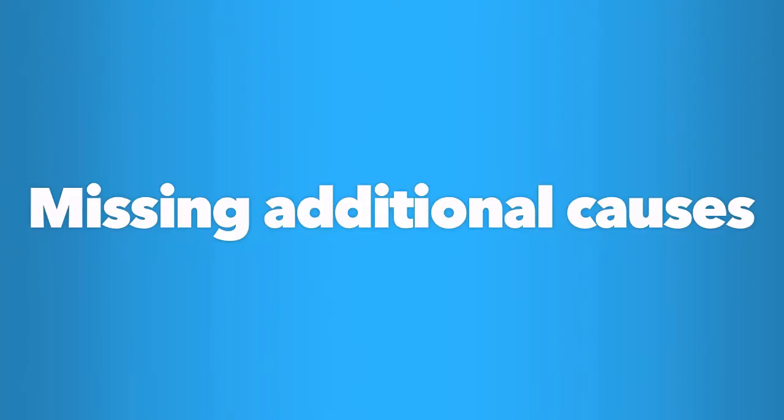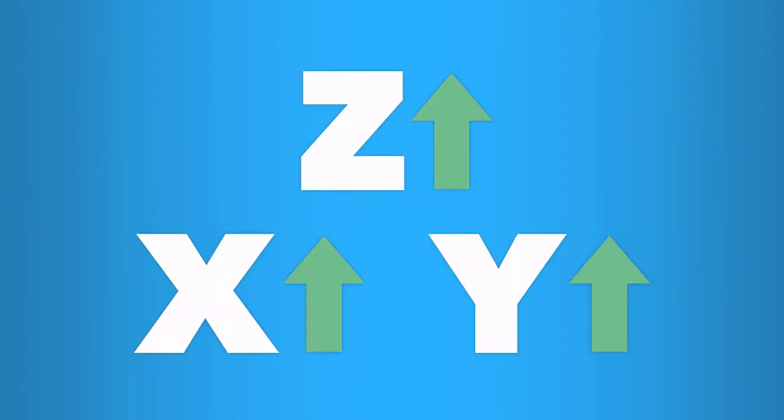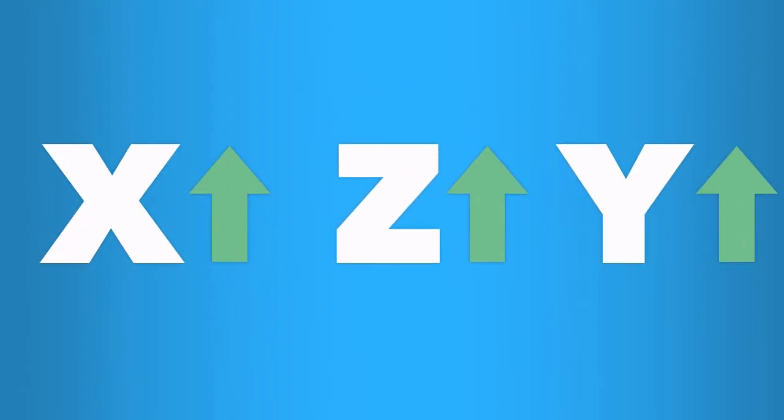Missing additional causes. You just learned about an error of reasoning in which some other factor, in this case, the common causal factor for X and Y, is missed. A related error also involves missing factors. In this case, missing out on additional causal factors.